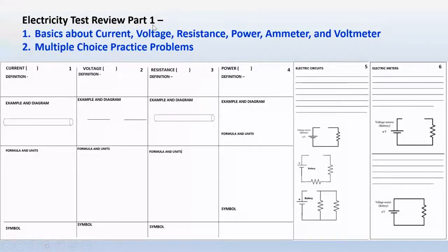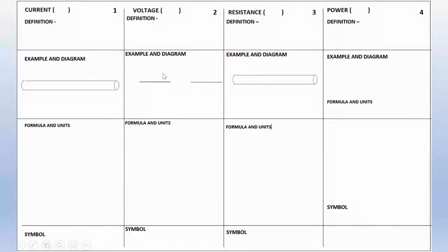Electricity Test Review Part 1. In this video, I'm going over the notes about current, voltage, resistance, power, electric circuits, and electric meters. Then I'll solve some multiple choice practice problems. In the notes, I'm going to explain each one following the same format: starting with the definition, then using an example and a diagram to explain the formula and units, and the symbol we use to represent each one.